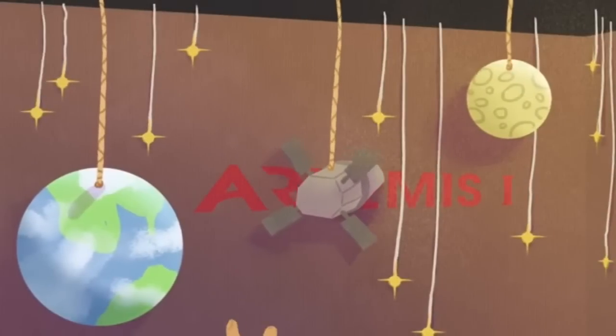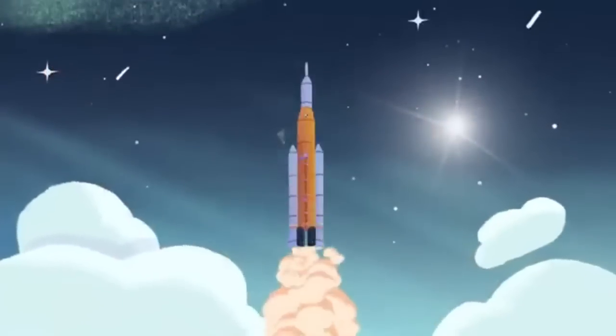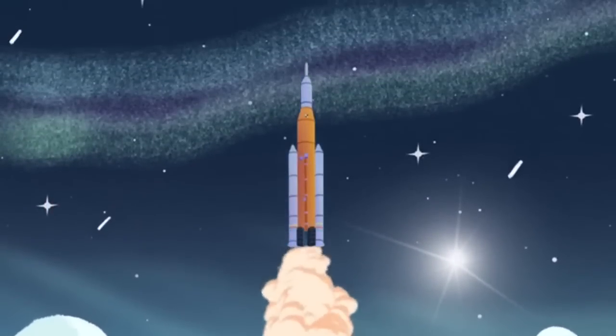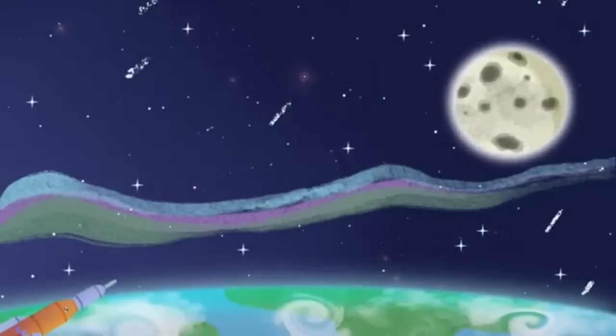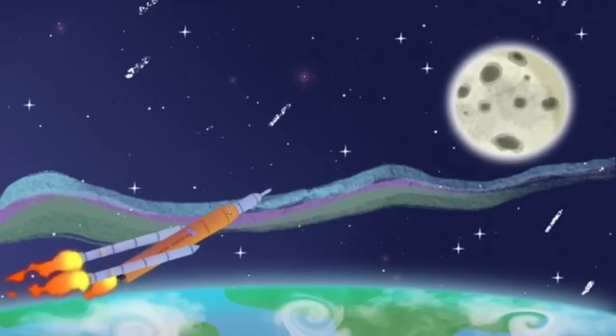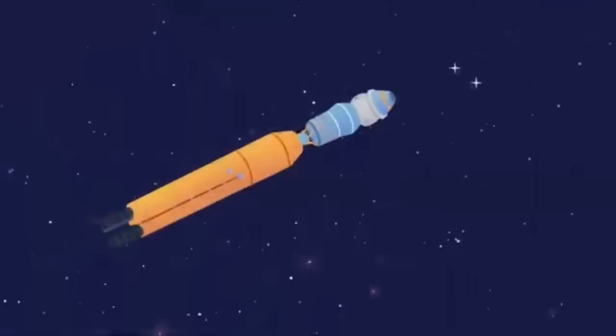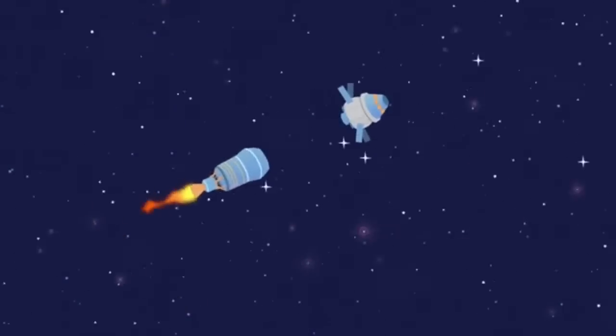Getting to the Moon isn't as simple as just flying straight there. On Artemis 1, the Space Launch System rocket will first take off from Earth with the Orion spacecraft on top. The upper stage of the SLS will take Orion out of Earth's orbit and give it a big push toward the Moon.